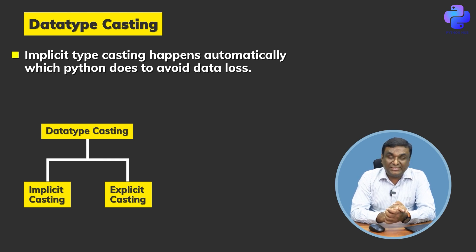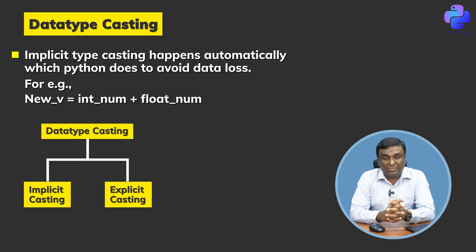This happens automatically with Python to avoid any data loss. For example, if I say I want to add an integer number and a float number and store it in a new variable, I can very well do it. Like 3 plus 5.5 would result in 8.5. Now this 8.5 is a float.